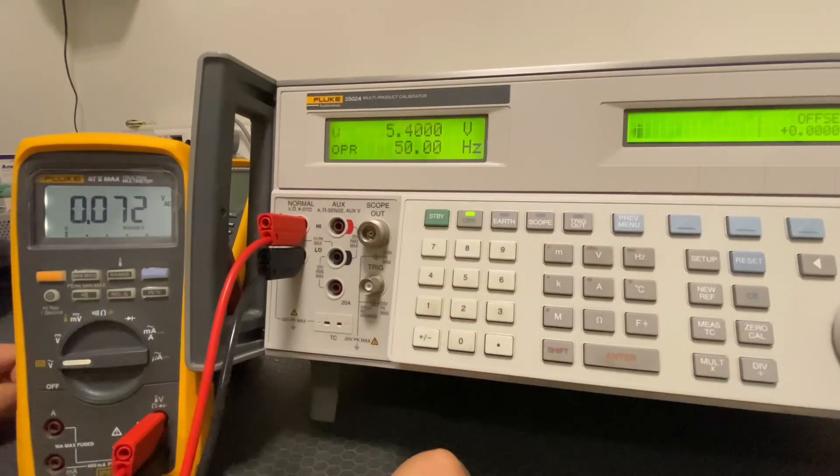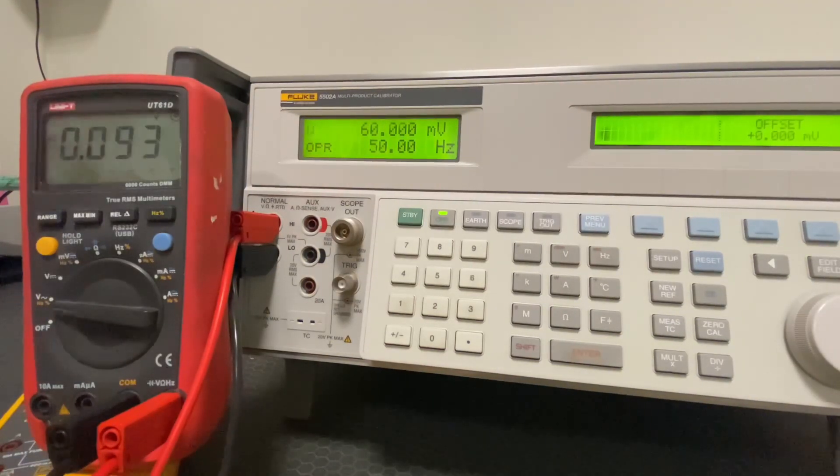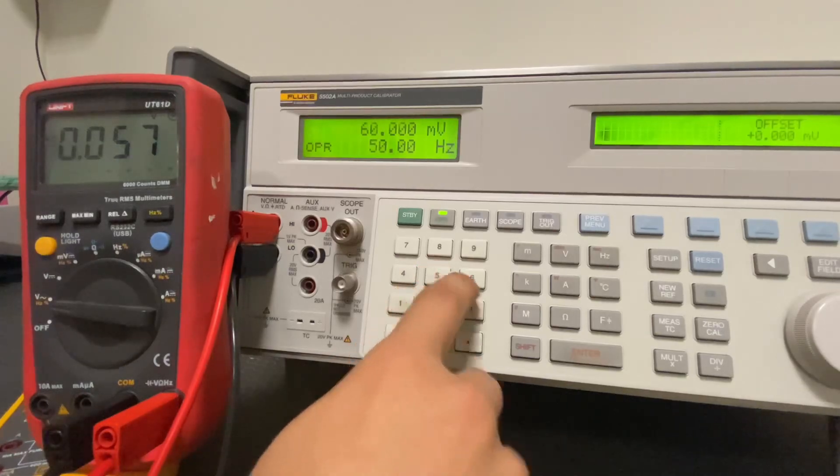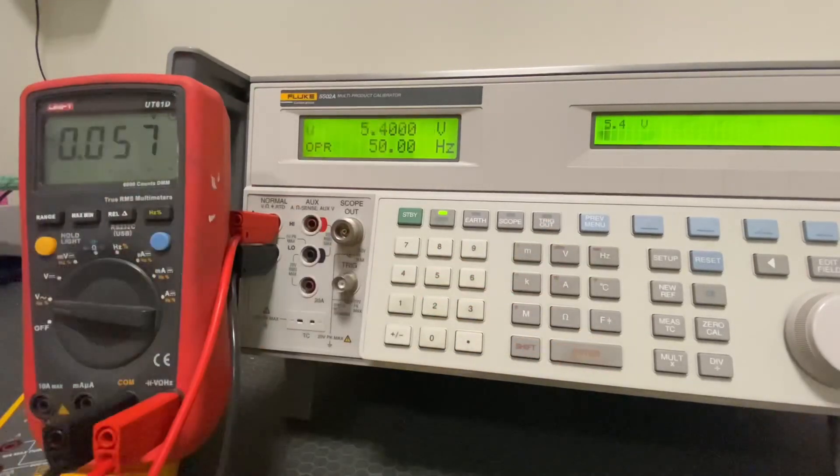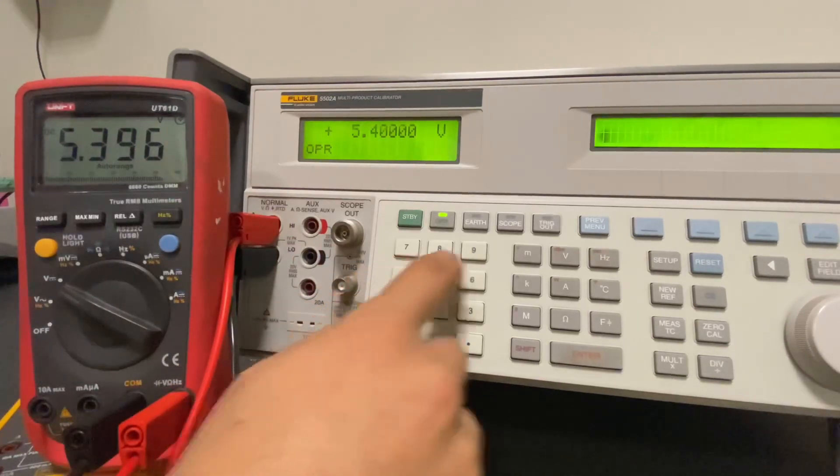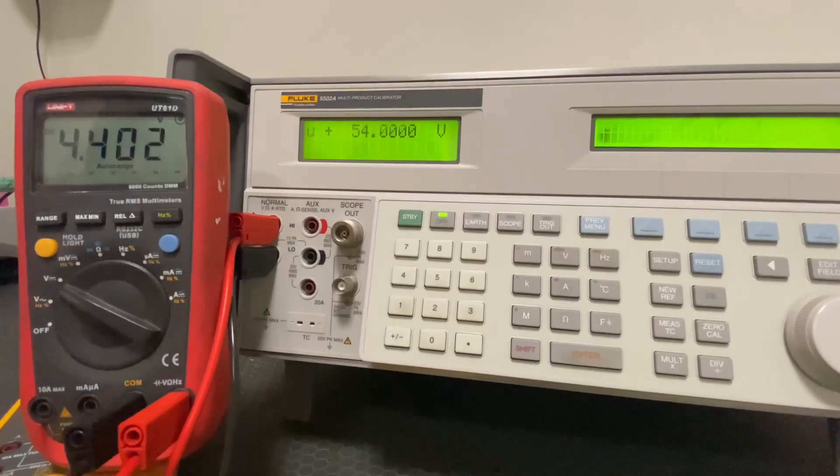We will check our measurements at 50 hertz. While the Fluke shows no deviation at 60 millivolts, the Unit shows a value that's 3 millivolts lower. Let's check the 5.4 and 54 volt values. Don't forget to subscribe to my channel for more videos like this.